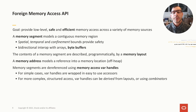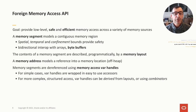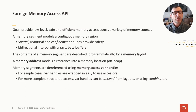The Foreign Memory Access API is the first building block of Panama's interop support. It provides a new, safe, and efficient API to allocate and access memory, whether on or off the Java heap. The main abstraction is called a memory segment, which models a contiguous region of memory with spatial and temporal bounds. A memory segment exists in space — with a base and limit address — and in time, because we can create, access, and then destroy it, giving it a life cycle.